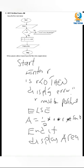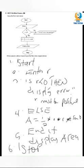Then display area, and stop. Remember start and stop use the same shape — a circle. So we have step one (start), step two (enter r), step three (if condition), step four (processing/else), step five (display area), and step six (stop).